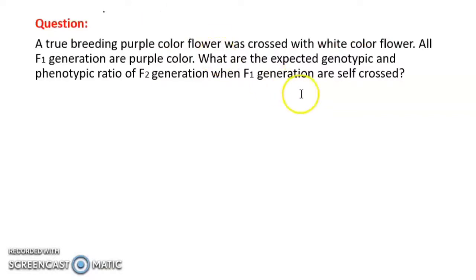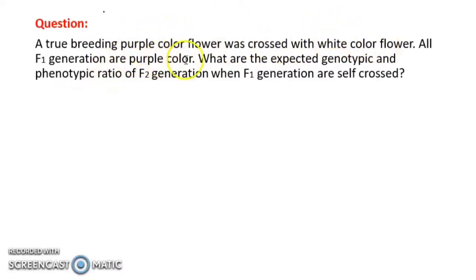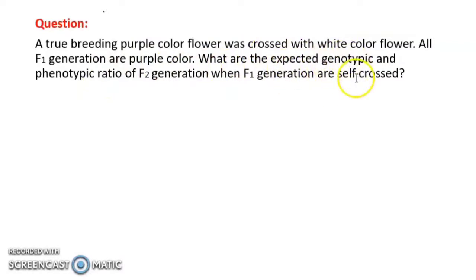The question: a true breeding purple color flower was crossed with a white color flower. All F1 generation are purple color. What are the expected genotypic and phenotypic ratio of the F2 generation when the F1 generation are self-crossed?